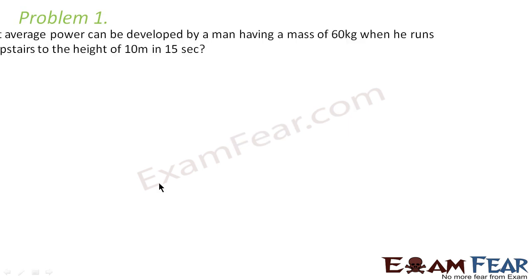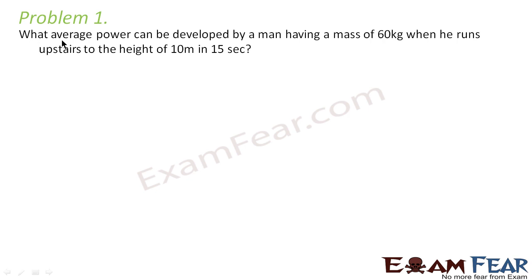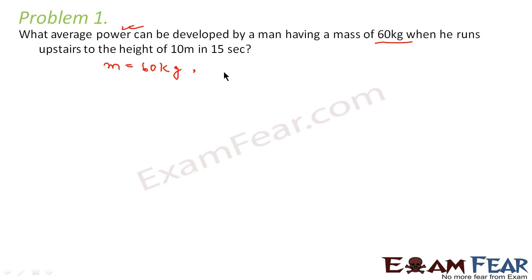Let us look at problem 1. It says: what average power can be developed by a man having a mass of 60 kg when he runs upstairs to a height of 10 meters in 15 seconds? So we have to calculate the power. Mass is equal to 60 kg, height is 10 meters, and time is 15 seconds.